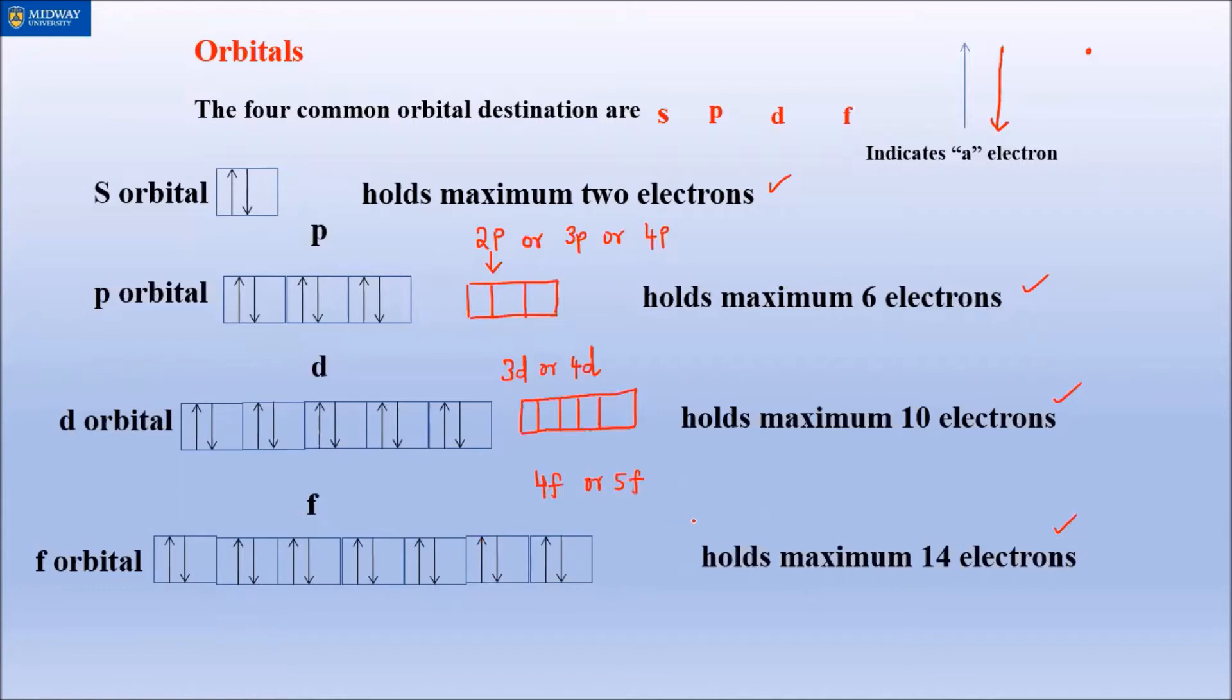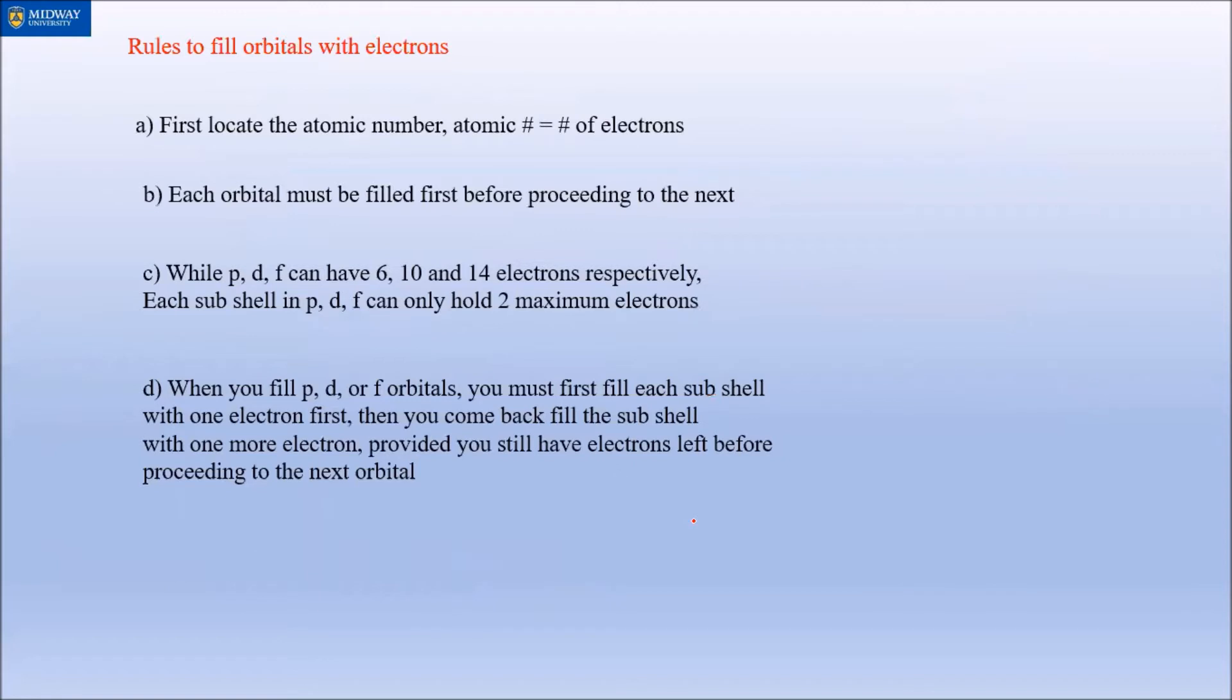When there are three or four or any other number besides six, ten, and fourteen, we have to create some rules. Here are the rules: First, you have to locate the atomic number, which is the number of electrons. You can also write the correct electronic configuration first if you are struggling - just like the free flow. Once you have it, then it's easy to set up the box.